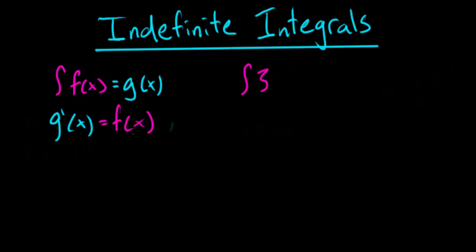We want to find what that's equal to, but we're not sure because we've never taken an integral before. We don't know what our g of x is going to be equal to. But we can ask ourselves: we know that g prime of x is going to get us 3. So what do I need to take the derivative of to get 3? Well, all we have to do to get 3 is take the derivative of 3x. If we're taking the derivative of 3x, we get our answer equal to 3. So we're just moving backwards right now.